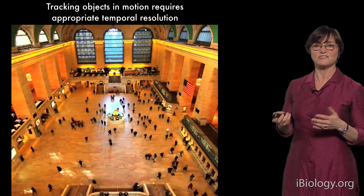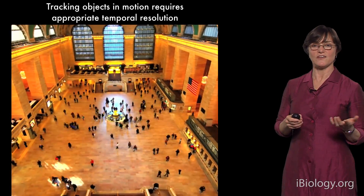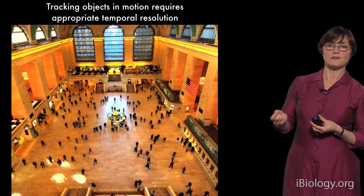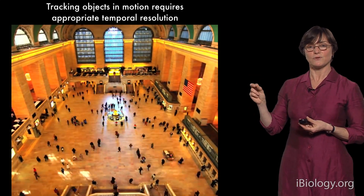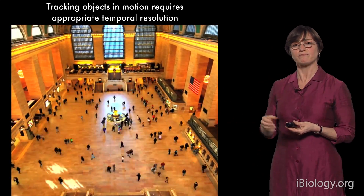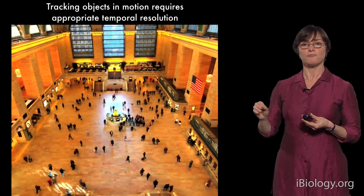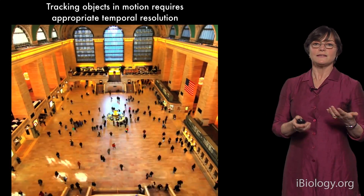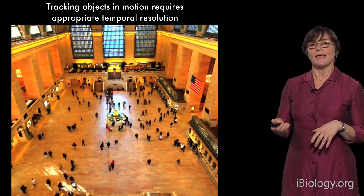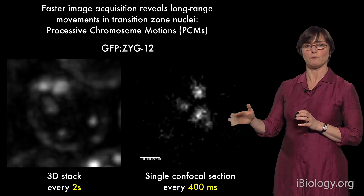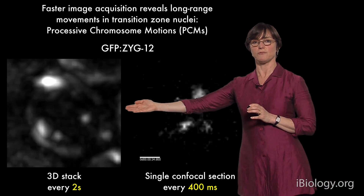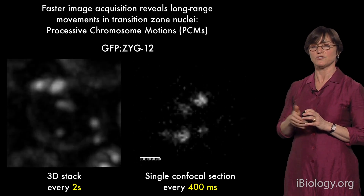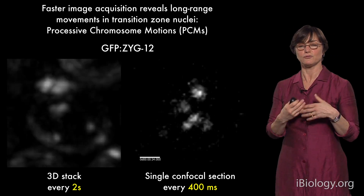To illustrate: if it takes someone on average a minute to cross Grand Central Station and you only take an image every minute or 30 seconds, you're lucky to see the same person in even two frames — you can't measure their rate of motion through space. We realized we were under-sampling, so we went to a higher frame rate, taking individual frames rather than capturing the full 3D volume. In these faster movies, we could now see persistent or processive chromosome motions that we could track over multiple frames and actually measure their velocity and duration.